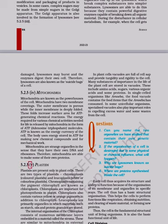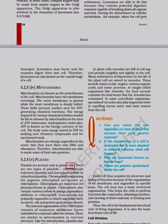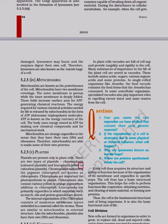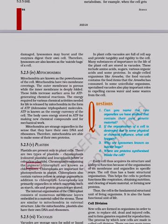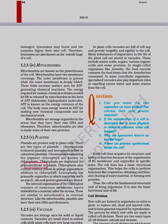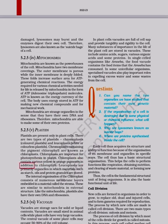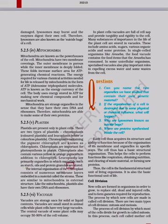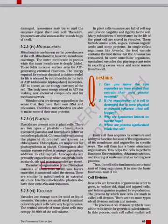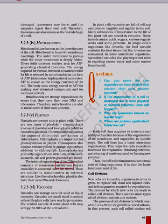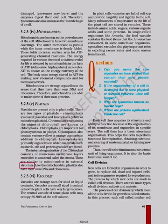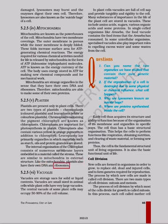5.2.5.5 Plastids: Plastids are present only in plant cells. There are two types of plastids — chromoplasts, which are colored plastids, and leucoplasts, which are white or colorless plastids. Chromoplasts containing the pigment chlorophyll are known as chloroplasts. Chloroplasts are important for photosynthesis in plants. Chloroplasts also contain various yellow or orange pigments in addition to chlorophyll. Leucoplasts are primarily organelles in which materials such as starch, oils and protein granules are stored. The internal organization of the chloroplast consists of numerous membrane layers embedded in a material called the stroma. Like the mitochondria, plastids also have their own DNA and ribosomes.